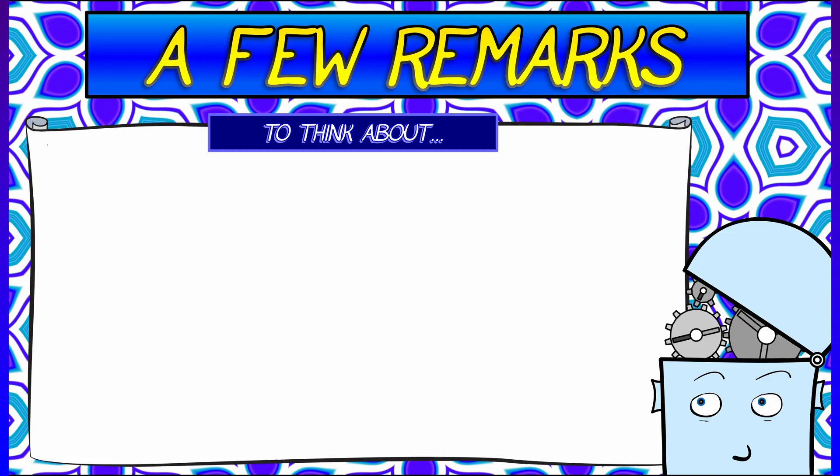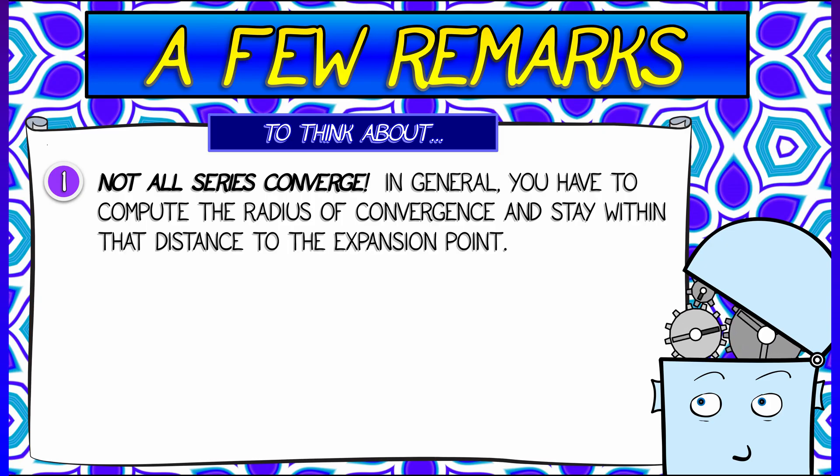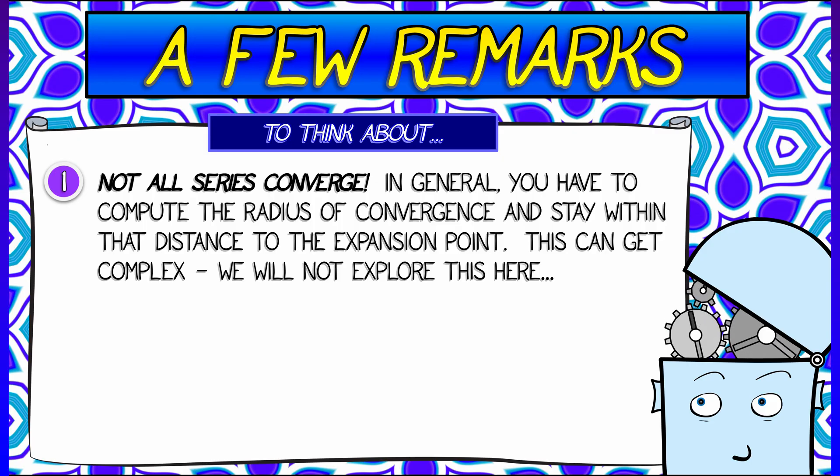To close things out, a couple of remarks. First of all, we haven't talked about convergence at all. As you know, when you have a series, you have to compute a radius of convergence and stay within it. In the multivariate case, it can get complex—we're not going to explore that here at all, but do remember to pay attention to convergence.